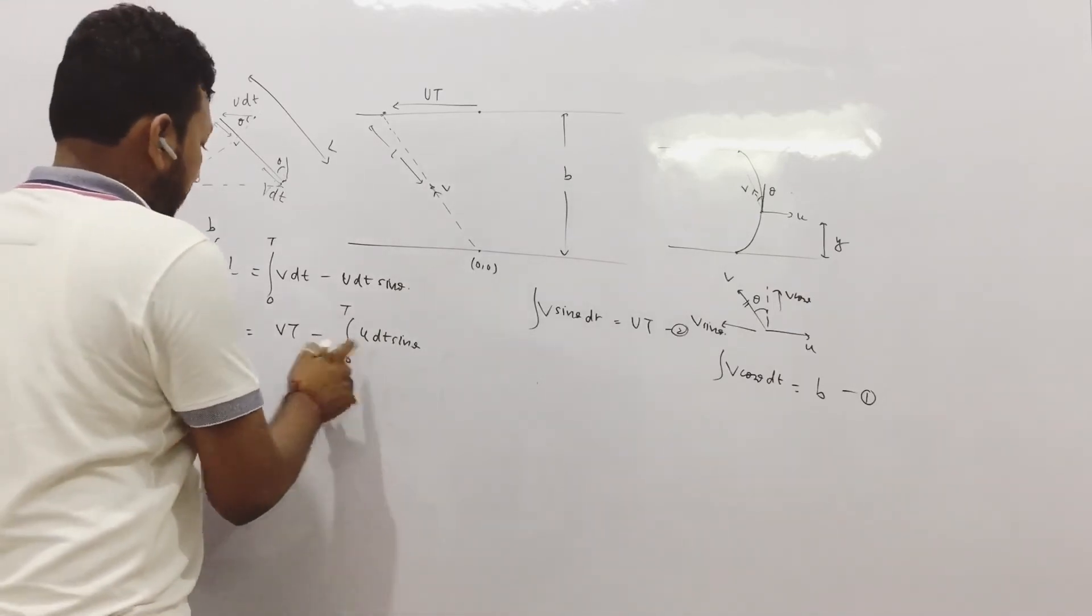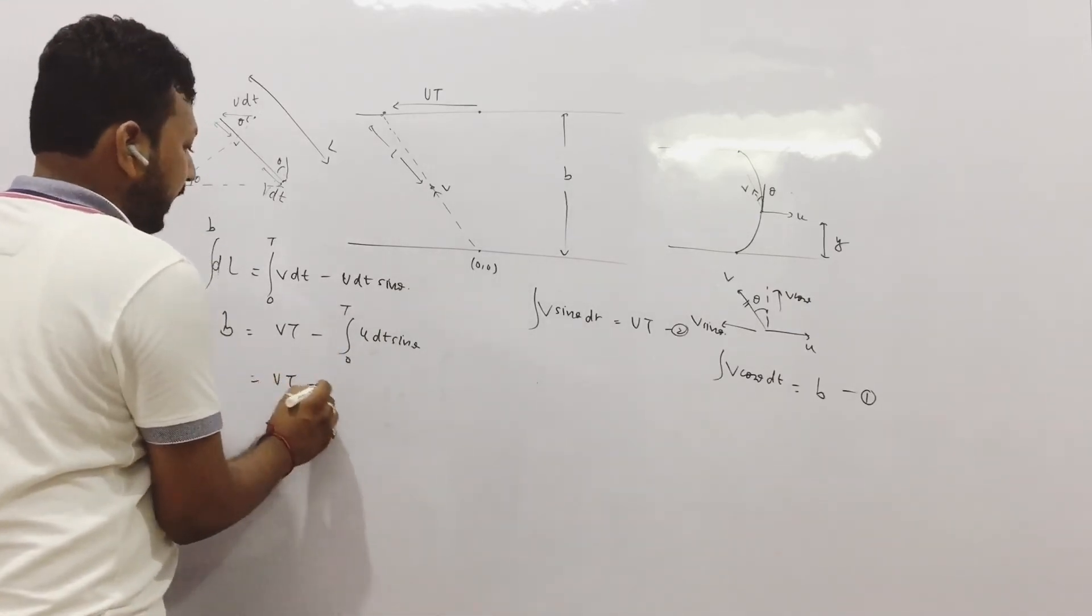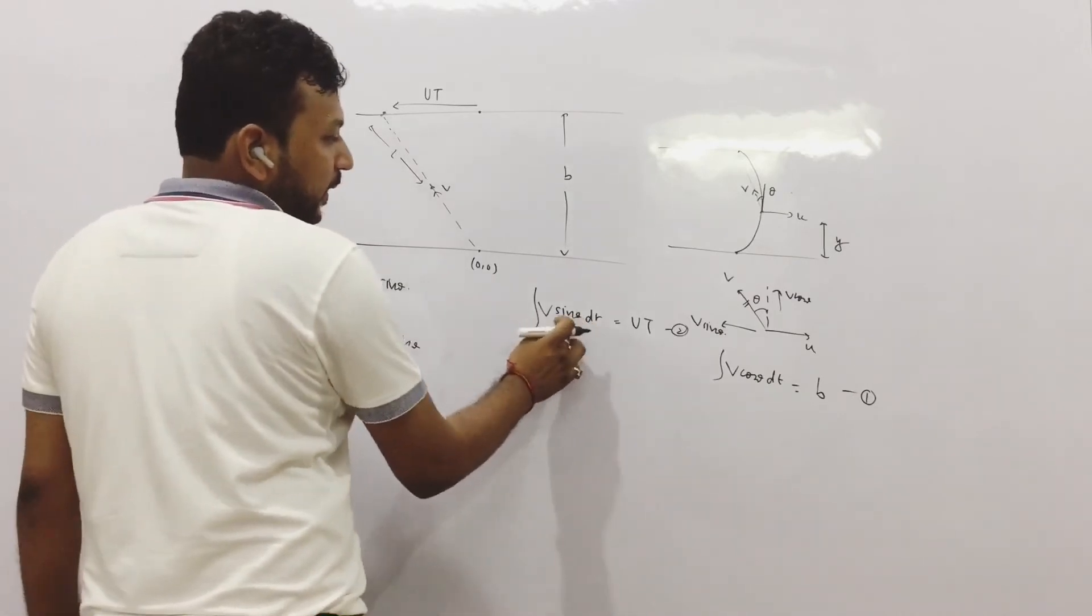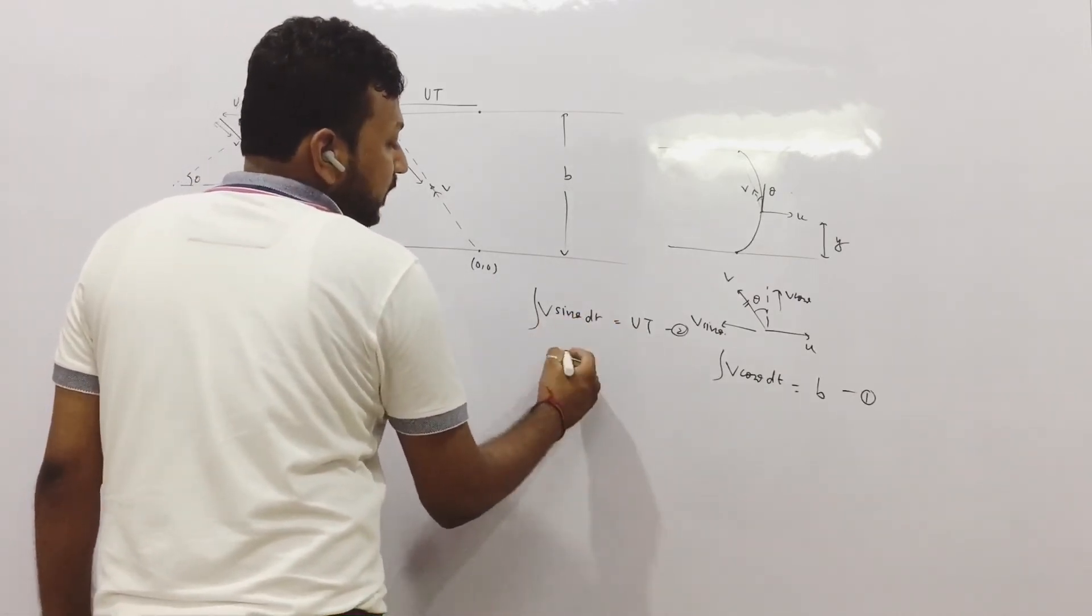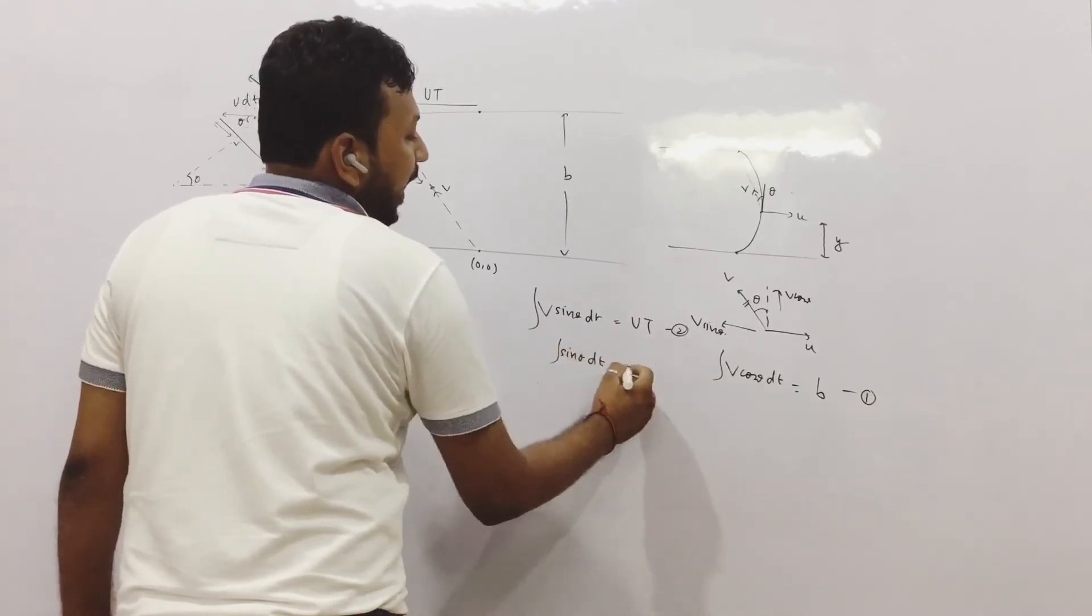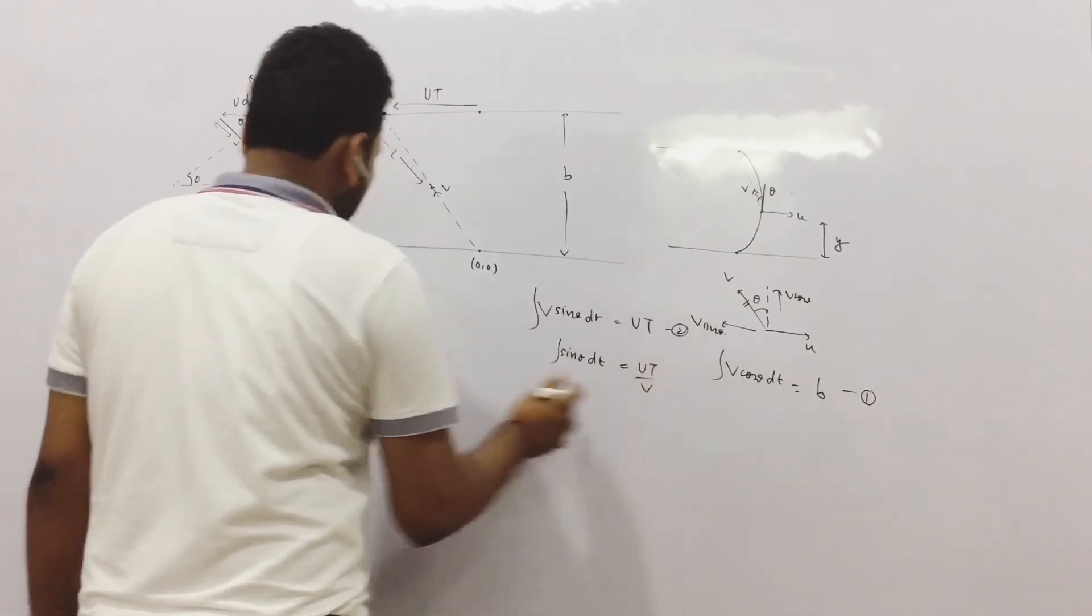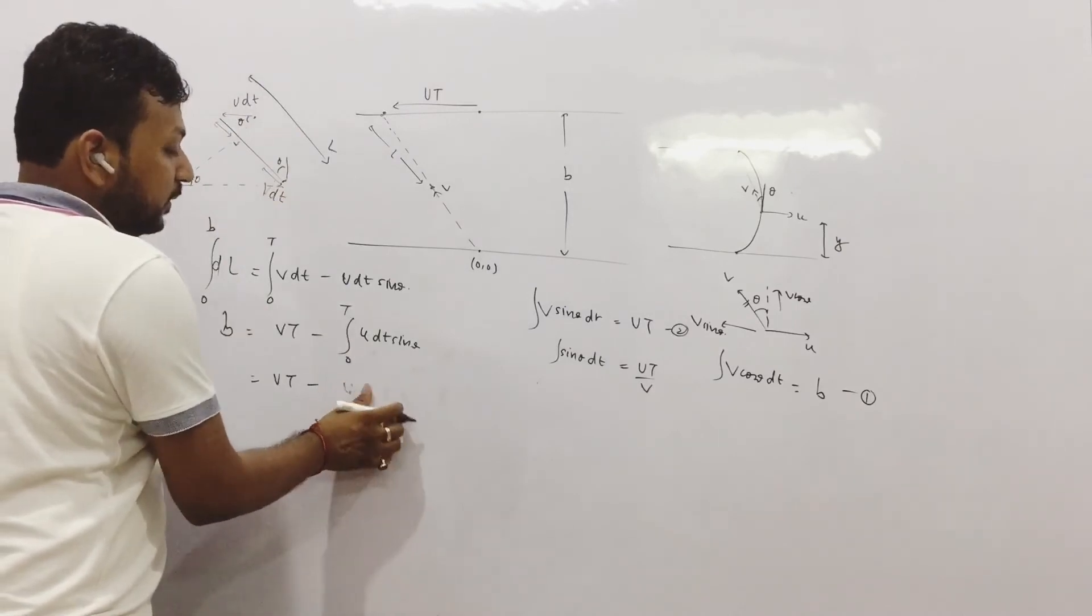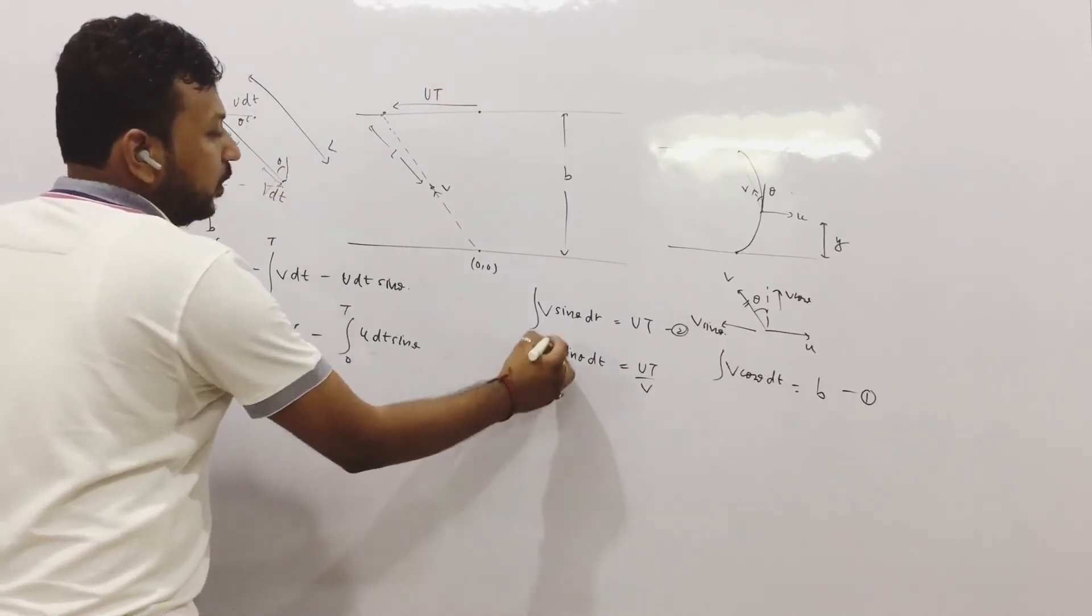Now this thing we can write as v dt minus u dt sin theta integration. Now this is the special thing that we did. We did not know the value of this and we just put it in the terms of variable here. This is the thing. This is also from 0 to t.